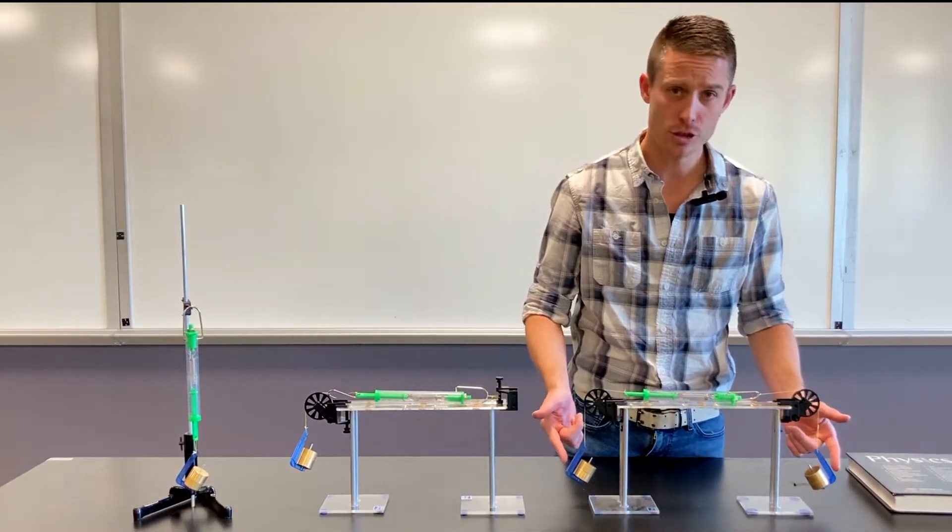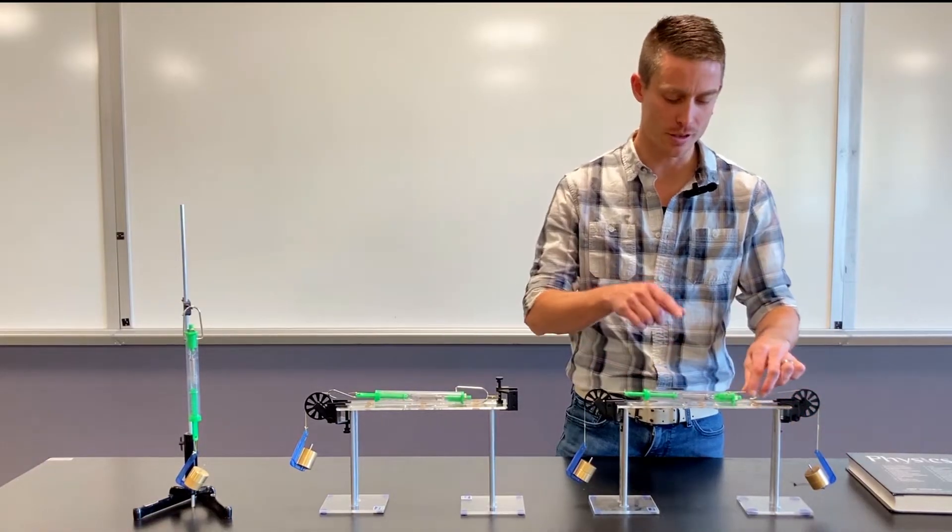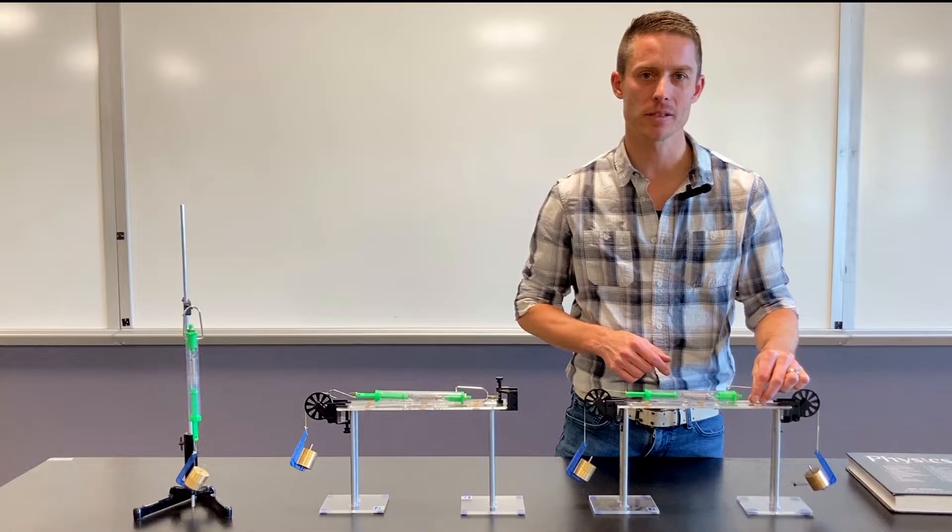I've got two sets of two newton weights hanging off the edge of some strings. And the question is, what's the reading on the spring scale?